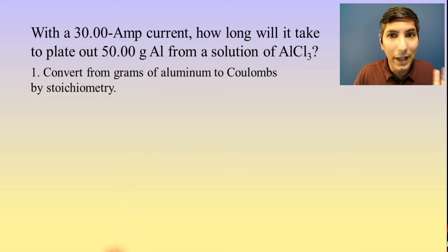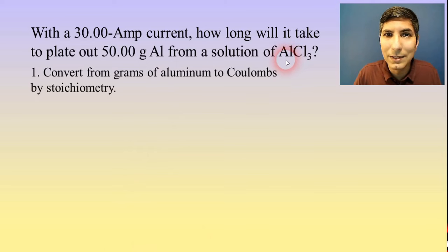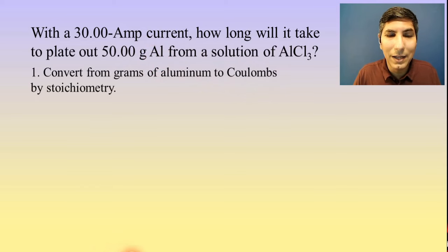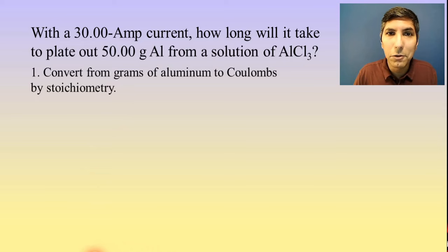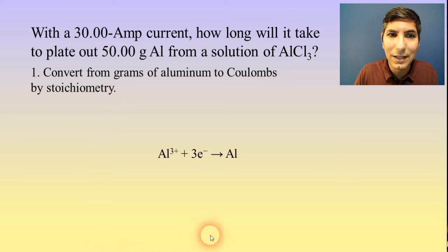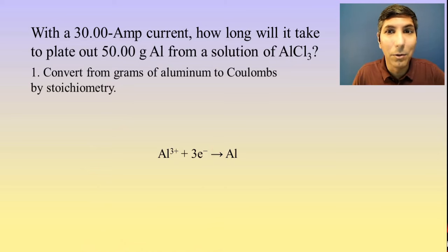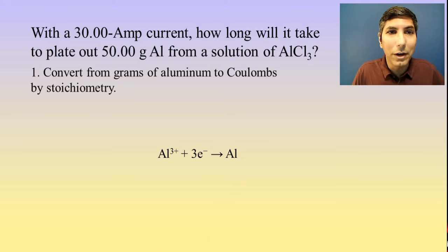We need a balanced equation. We're starting with aluminum ions in solution and trying to plate out aluminum. Aluminum ions have a charge of positive three, so our overall balanced half reaction is: Al³⁺ + 3e⁻ → Al. Make sure that you're able to write that, otherwise you're not going to get the right answer. Now we can go ahead and do our stoichiometry.